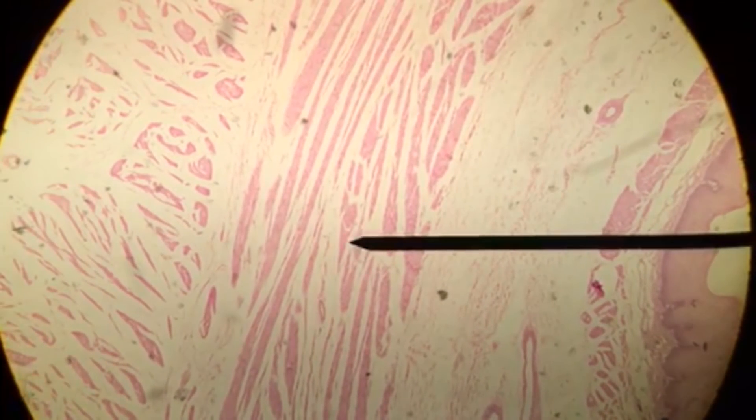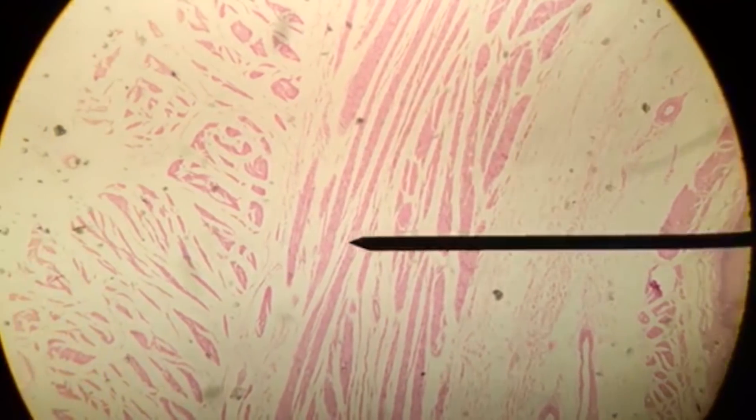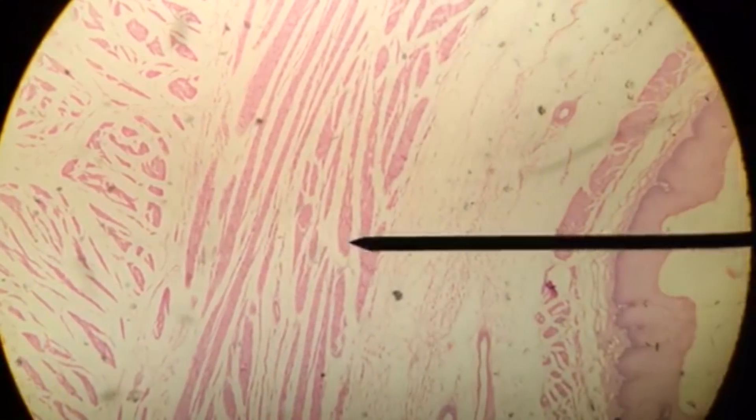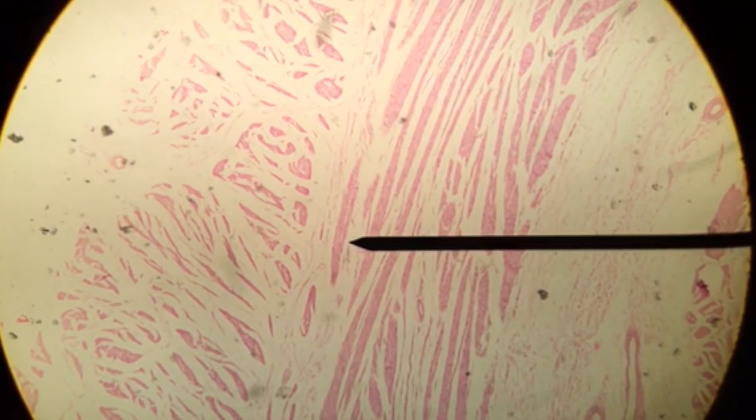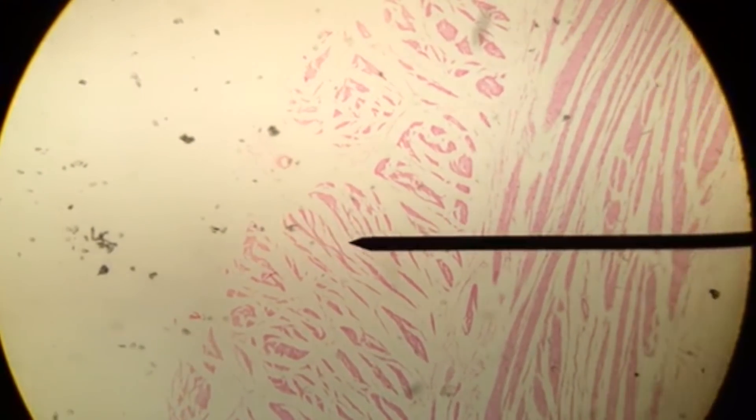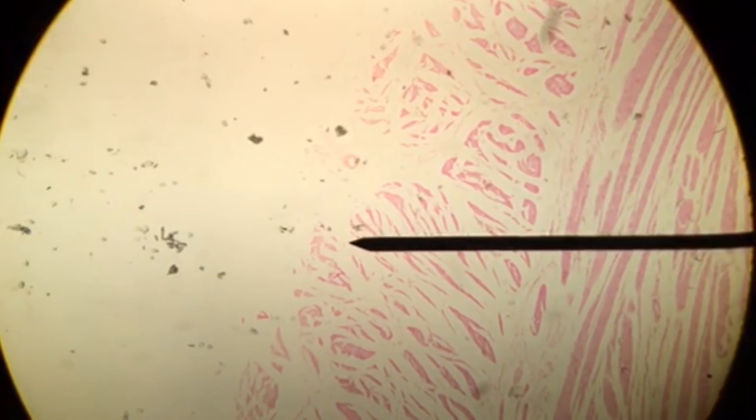The underlying layer underneath that submucosa is the muscularis. It is divided into two layers. This is our first circular layer, a circular arrangement of smooth muscle fibers. The layer underneath it will be our longitudinal layer, or second layer within our muscularis.